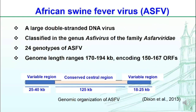ASF is caused by African swine fever virus, ASFV. It is a large, double-stranded DNA virus. It is classified in the genus Asfivirus of the Asfarviridae family. Currently, 24 genotypes of the virus have been identified. Its genomic size ranges from 170 to 194 kilobases, including 150 to 167 open reading frames.